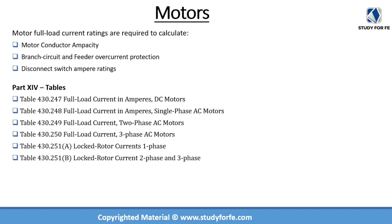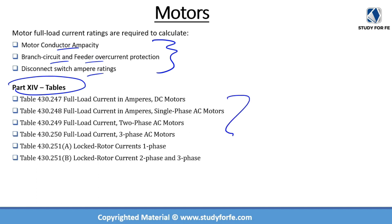The remaining seven parts are not directly related to motors but are indirectly related and still a worthwhile read. But the last part — Part XIV — which I didn't mention yet, is arguably one of the most important sections of Article 430 because it contains details regarding FLCs of the motors. Without FLCs, you cannot size a conductor, cannot size OCPDs for branch circuits, for feeder overcurrent protection, or for disconnect switches.